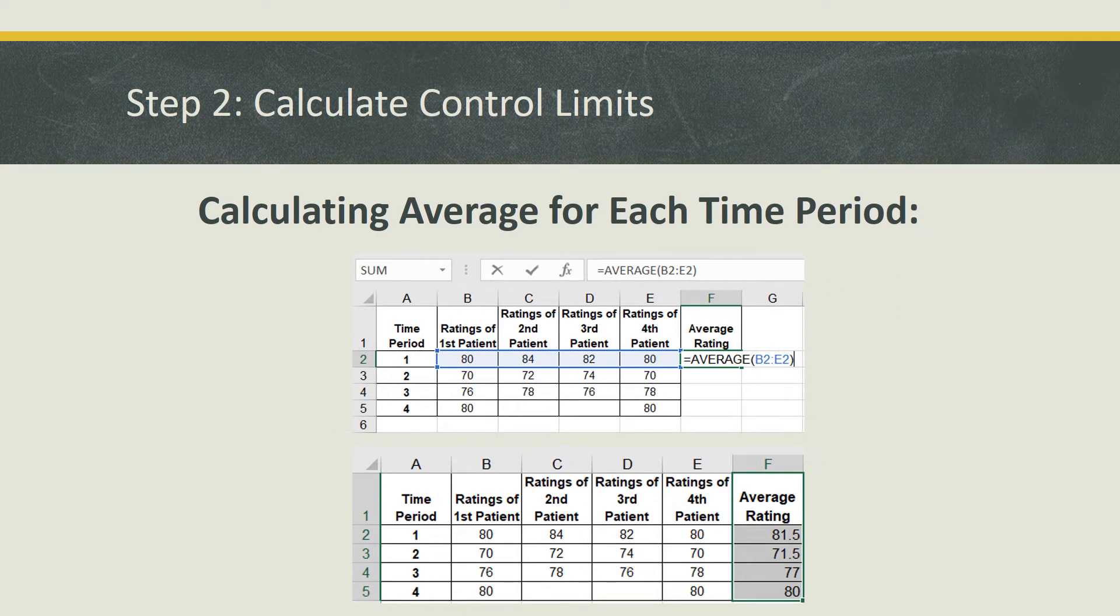Now the next step is calculating the control limits. But in order to do that, we have to make a few calculations prior for the average and standard deviation. The first thing you want to do is make a column named average rating. And then you would do the equal sign for the first row under that column and use the average function, which is a built in function in Excel, and select the ratings of first patient through the ratings of fourth patient as highlighted in blue. And instead of doing this for every single row, you can simply grab the right bottom corner of the cell once you press enter, and then drag it down to time period four. And that should auto populate each row using that formula that you made for the first row.